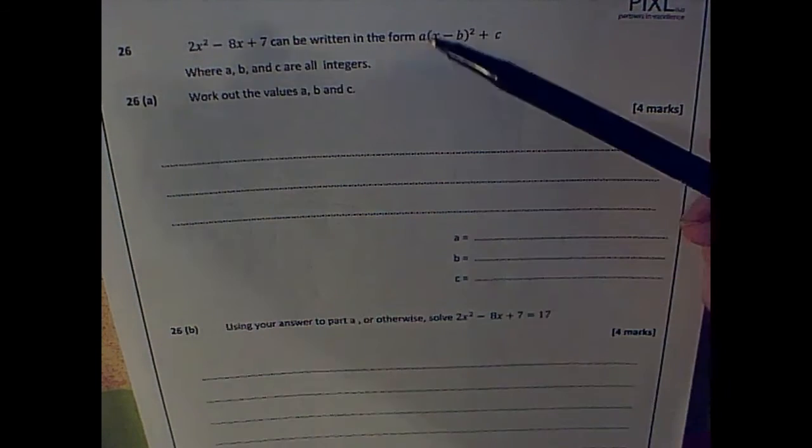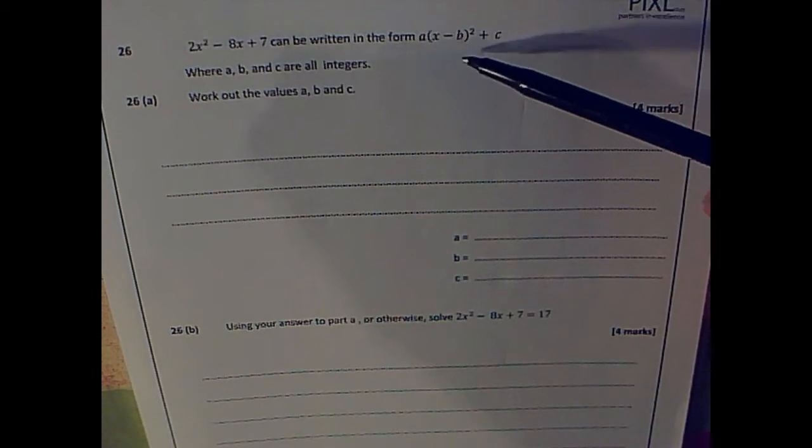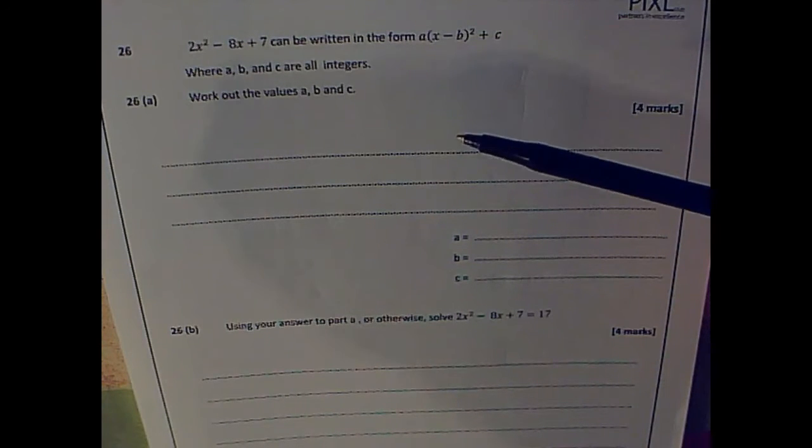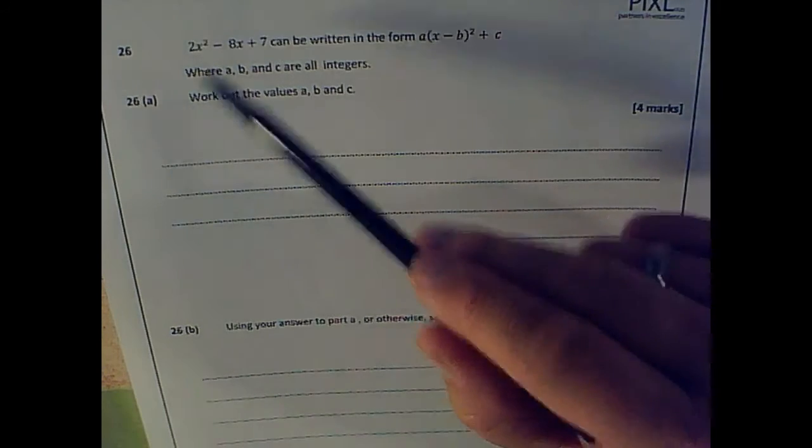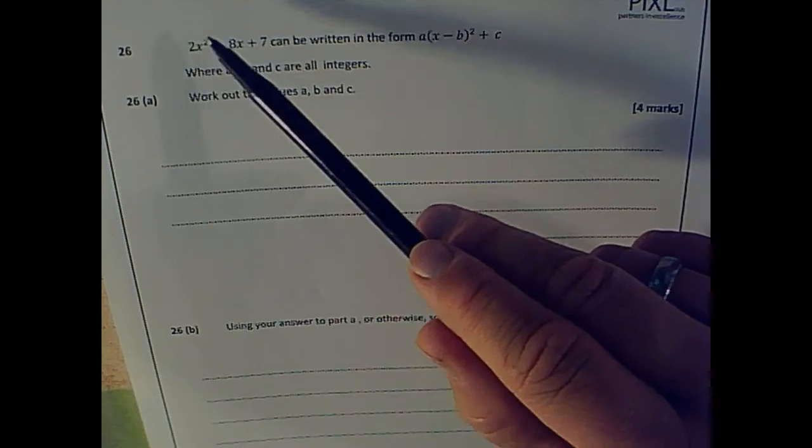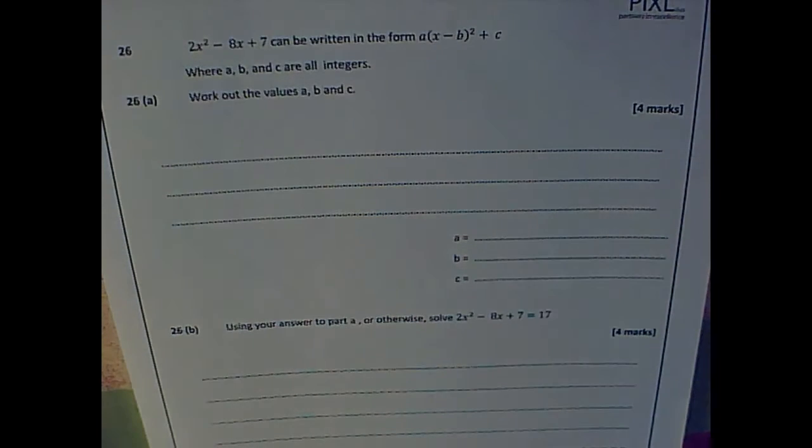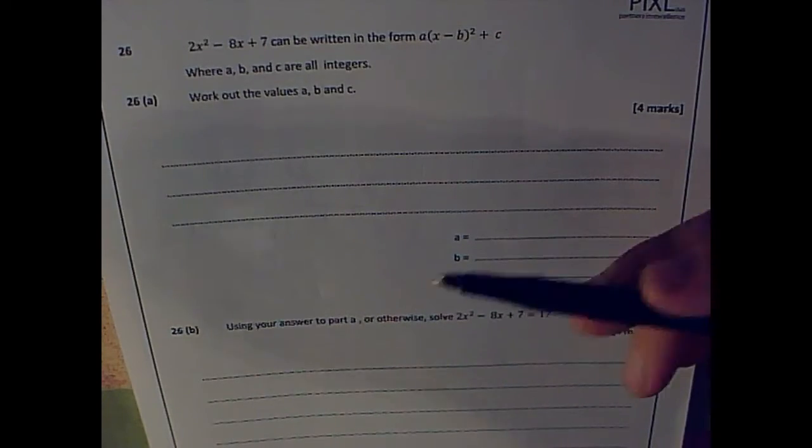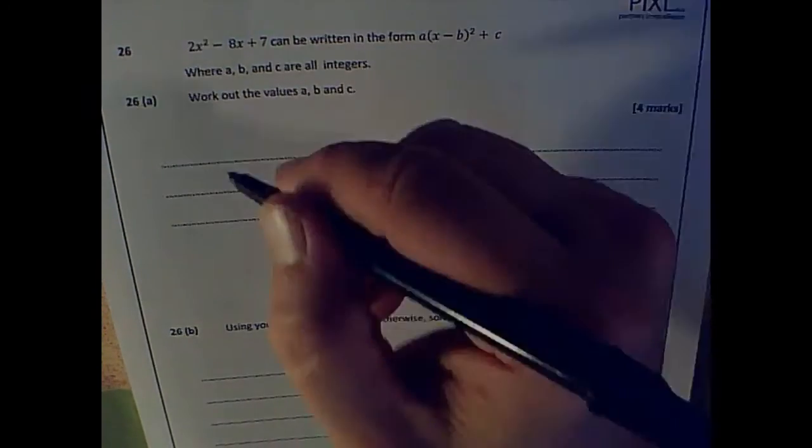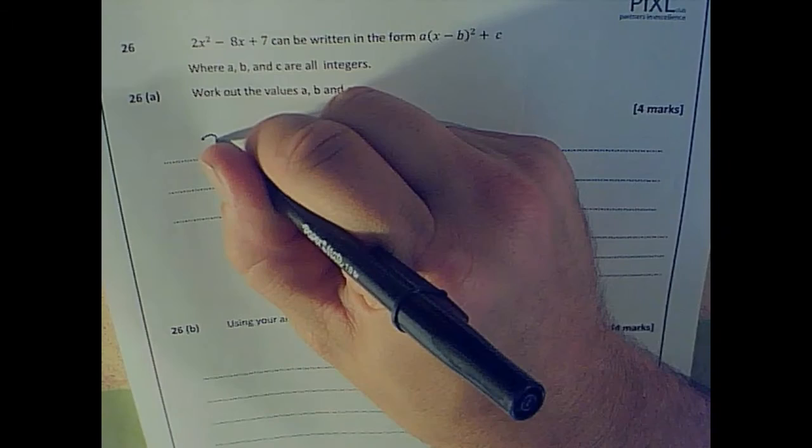So this format is the complete the square format. I know I've got to complete the square. To make it more tricky, I've got 2x squared here. Now I can't have 2x plus something all that squared because that would end up with 4x squared. So my 2 is outside of this situation, and then I've got my completing the square bit.